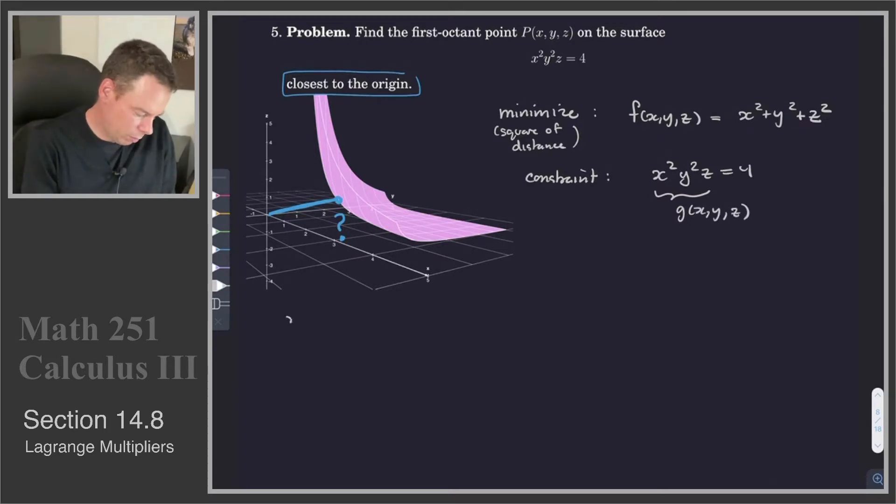So by the method of Lagrange multipliers, we need to solve these equations. F sub x equals lambda g sub x. F sub y is equal to lambda g sub y. F sub z is equal to lambda g sub z. And then we got our constraint equation x squared y squared z equal to 4.